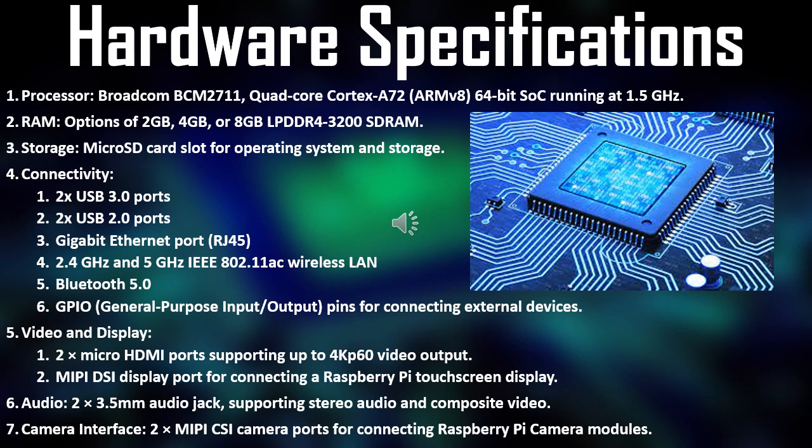In terms of memory, Raspberry Pi offers options of 2GB, 4GB, or 8GB RAM. The amount of RAM chosen affects the system's ability to handle multiple tasks simultaneously and run memory-intensive applications. Users can select the appropriate RAM configuration based on their specific requirements and project needs.